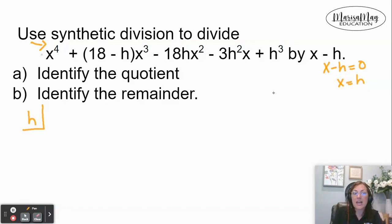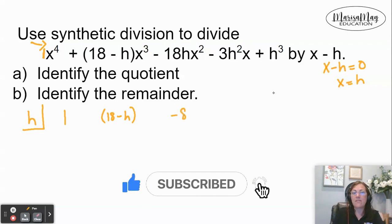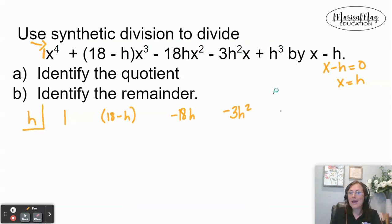So the first x coefficient I'll use is the one that's in front of the x to the fourth. Then I'm going to use the 18 minus h that's in front of x to the third. Then I'll do the negative 18h that's in front of x to the second. Then negative 3h to the second that's in front of x. And then finally the h to the third.